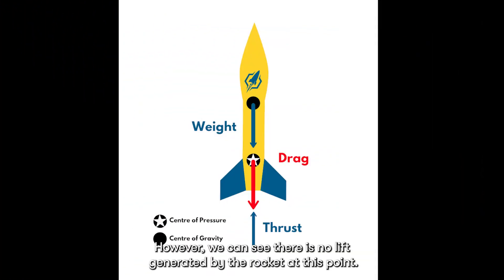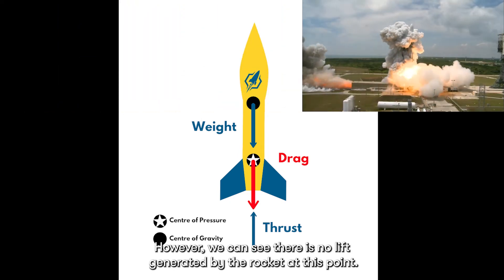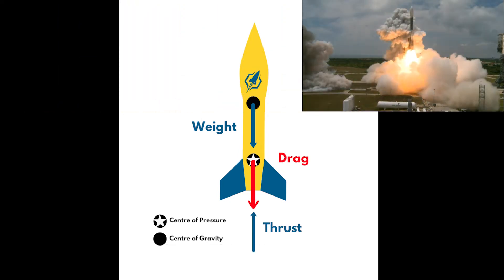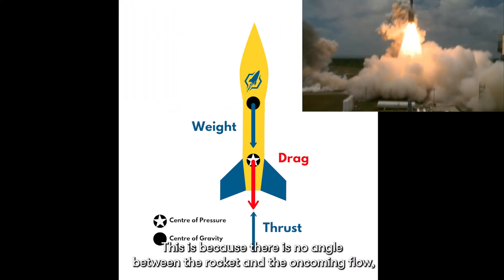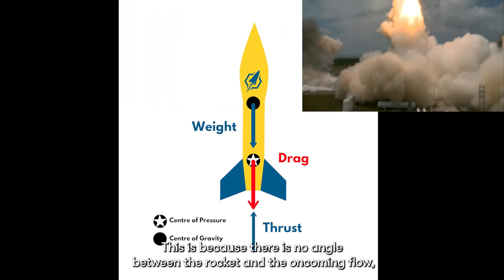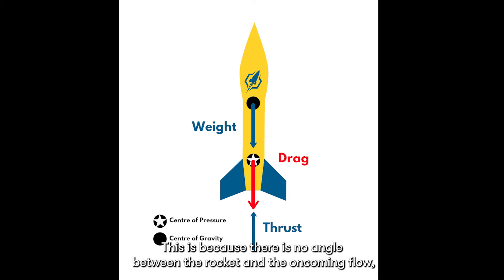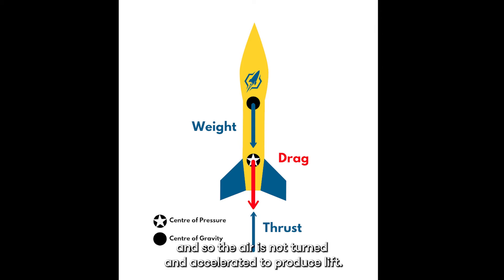However, we can see there is no lift generated by the rocket at this point. This is because there is no angle between the rocket and the oncoming flow, and so the air is not turned and accelerated to produce lift.